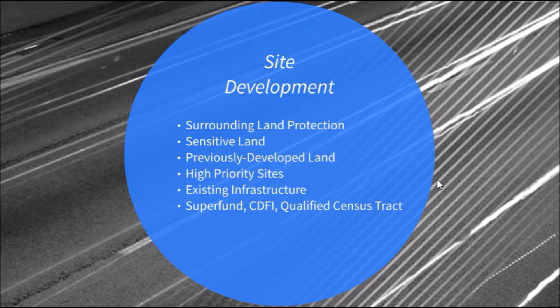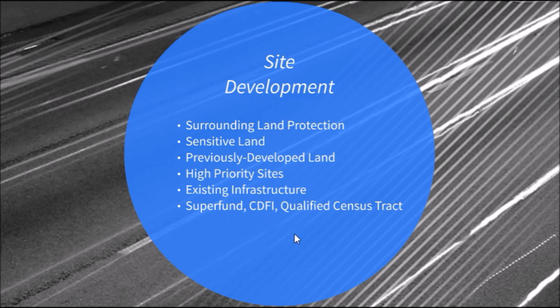Other high-priority site examples include the EPA's national priority sites, federal empowerment zone sites, and the Department of Housing and Urban Development's qualified census tracts. There's also the historic infill district, where a building must look like the local architecture. Superfund sites are investigated and cleaned up under a federal program on the EPA's national priority list. Federal empowerment zones are highly distressed urban and rural areas that receive federal aid. The CDFI fund promotes low-income community development, and HUD's qualified census tracts are units eligible for housing subsidies and tax credits.